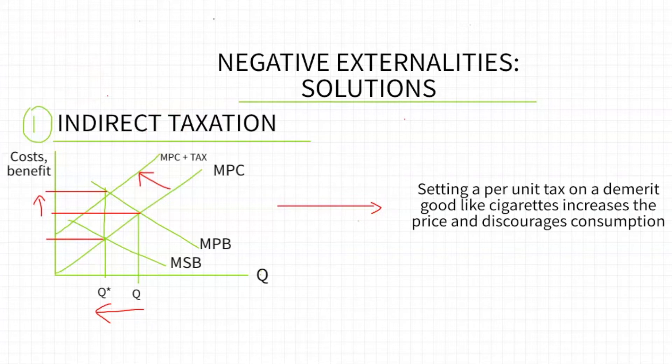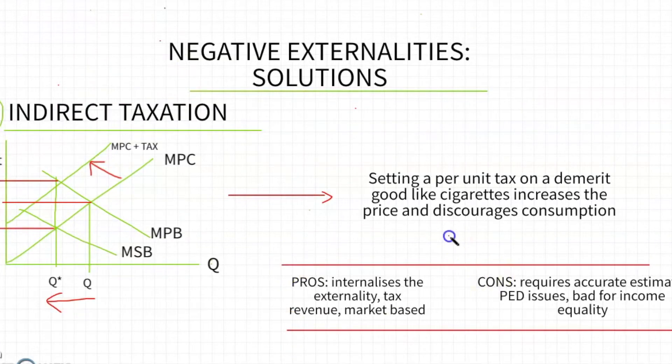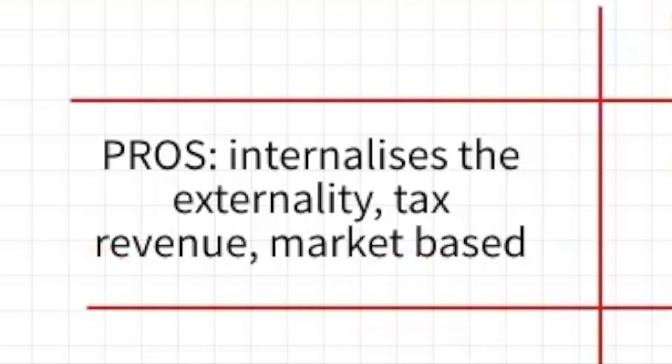You also should know an example for the taxation or the solution of the negative externalities. But really one of the most important things that you need to know besides drawing the diagram and understanding what the negative externality is in examples is knowing how to evaluate the different solutions. The benefits of using indirect taxation to decrease the consumption of demerit goods is that it's a way of internalizing the externality. You're increasing the cost of the products in order to signal to consumers that there are societal costs associated with their actions. Another benefit is that it creates a lot of tax revenue. For a lot of countries, cigarette tax represents a big source of the government budget, and this cigarette tax or alcohol tax can then be used to subsidize healthcare or to compensate third parties that have been affected by secondhand smoke.